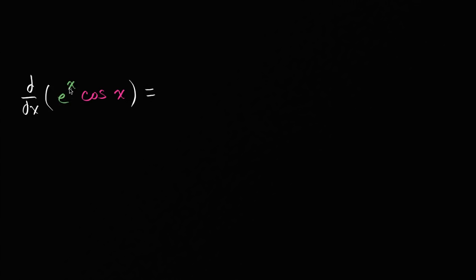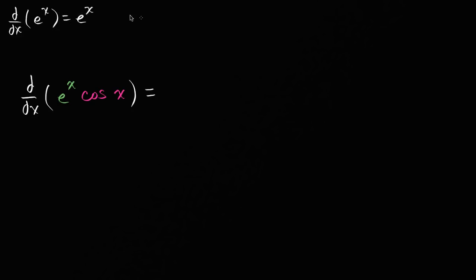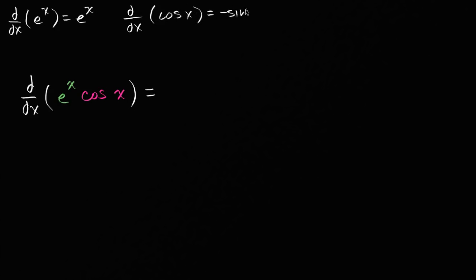When you look at this, you might say, well I know how to find the derivative with respect to x of e to the x — that's in fact just e to the x. We know a few things. We know the derivative with respect to x of e to the x is e to the x. We know the derivative with respect to x of cosine of x is equal to negative sine of x.